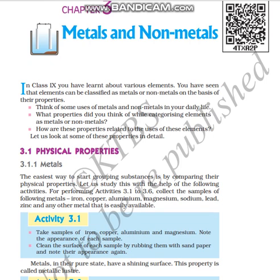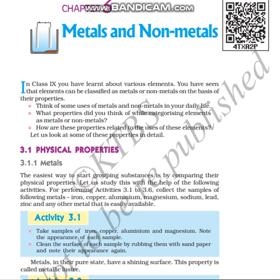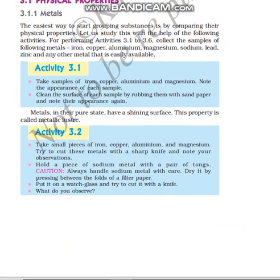How are these properties related to the uses of these elements? Let us look at some of the properties and details. First, we will focus on the physical properties of metals. The easiest way to start grouping substances is by comparing their physical properties. Physical properties means properties of a metal which we can see with our naked eyes, which we can sense, perceive, and feel.